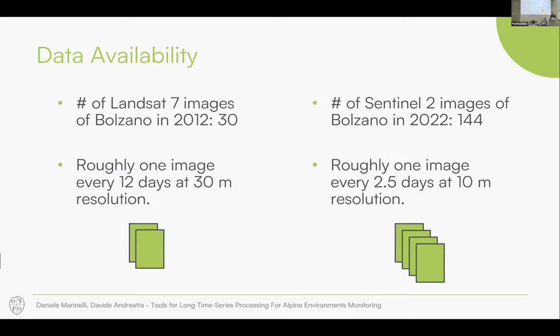For a quick comparison: in 2012, over Bolzano, you would have about 30 Landsat images at 30-meter resolution. Nowadays, for the same one-year period, you have around 140 images at 10-meter resolution. So data availability has increased significantly.